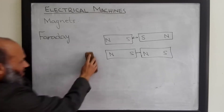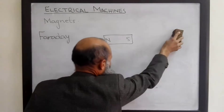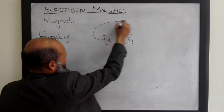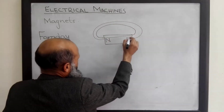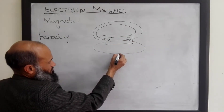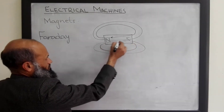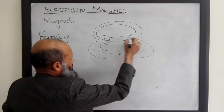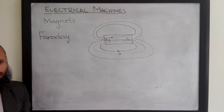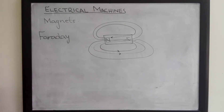Faraday proposed that the strength of a magnetic field at a particular point can be described by the intensity of the magnetic lines. These magnetic lines emerge from the north pole of the magnet and enter into the south pole. The strength of the magnetic field at a particular point can be described by the intensity or density of these magnetic lines of flux. These are hypothetical lines — they are not real lines — but many magnetic phenomena can be explained by them.